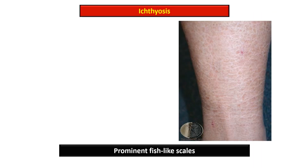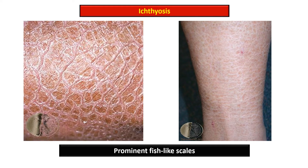This gross picture shows prominent fish-like scales present on the acral parts of the body, on both flexor and extensor surfaces of the extremities, but the palms and hands are spared. The closer picture shows the fish-scale-like prominent appearance, which is due to compacted, thickened stratum corneum.